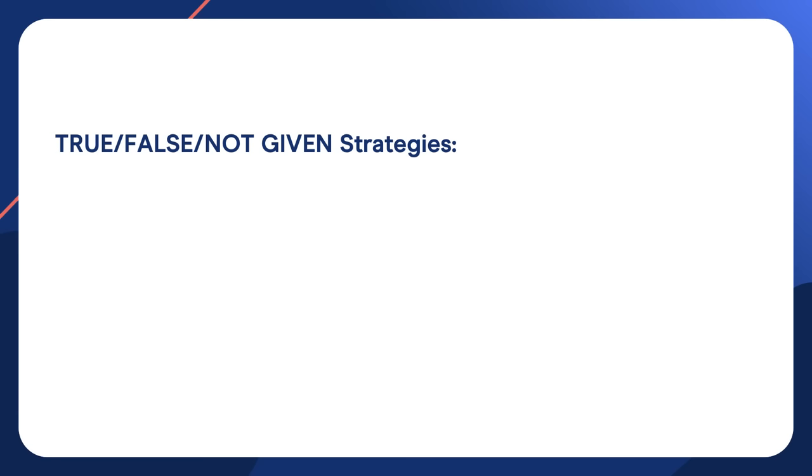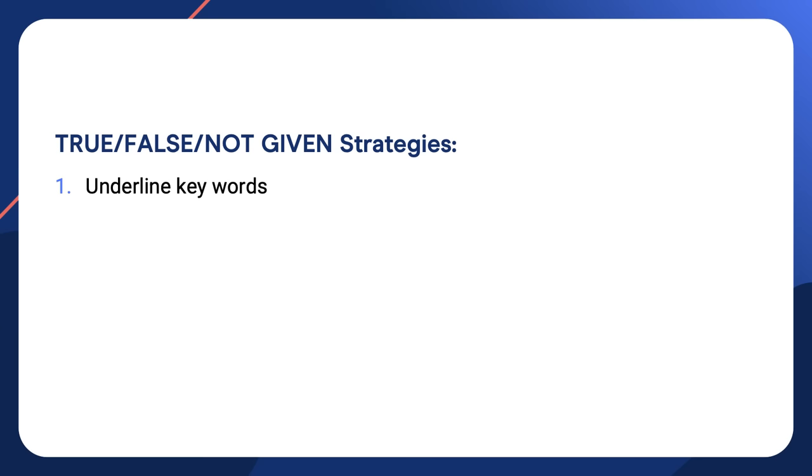Here are some strategies I recommend for this task. First, underline keywords — identifying the information you are looking for will help you find it, and the action of underlining or highlighting helps you focus. Next, remember that the answers will always be in order. The answer to question five will always be found in the text after the answer to question four and before question six. If you cannot find the answer to question five between those two points, it is very likely not there — meaning the answer is not given.